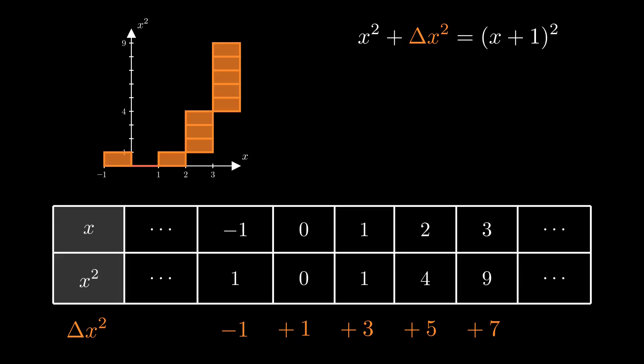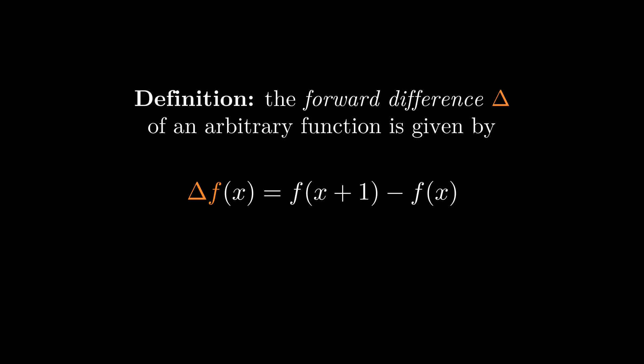Well, just by rearranging the question, we get the answer, which simplifies down to 2x plus 1. This discrete rate of change thing, delta, is known as the forward difference operator, and in general it's defined on a function by f of x plus 1 minus f of x.